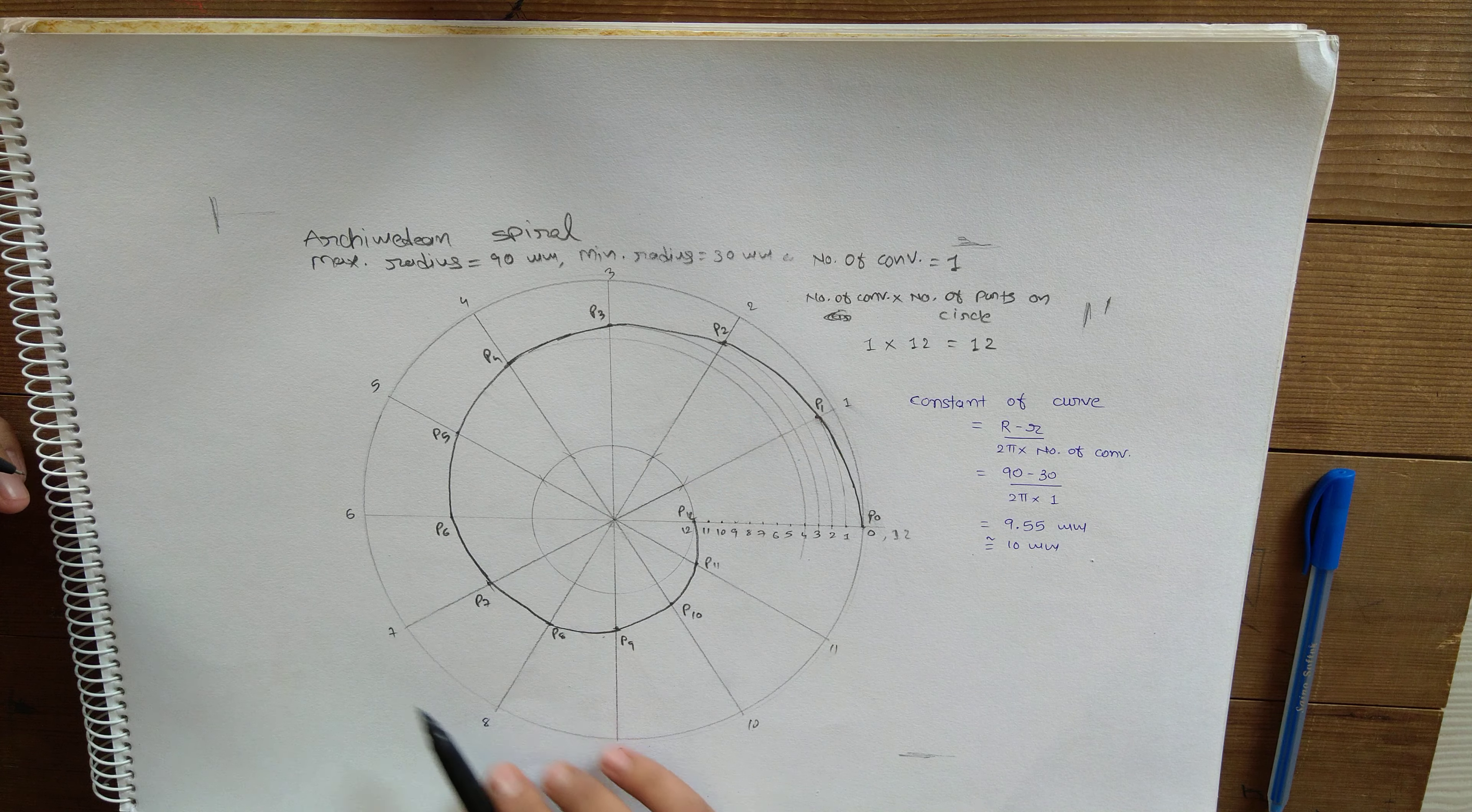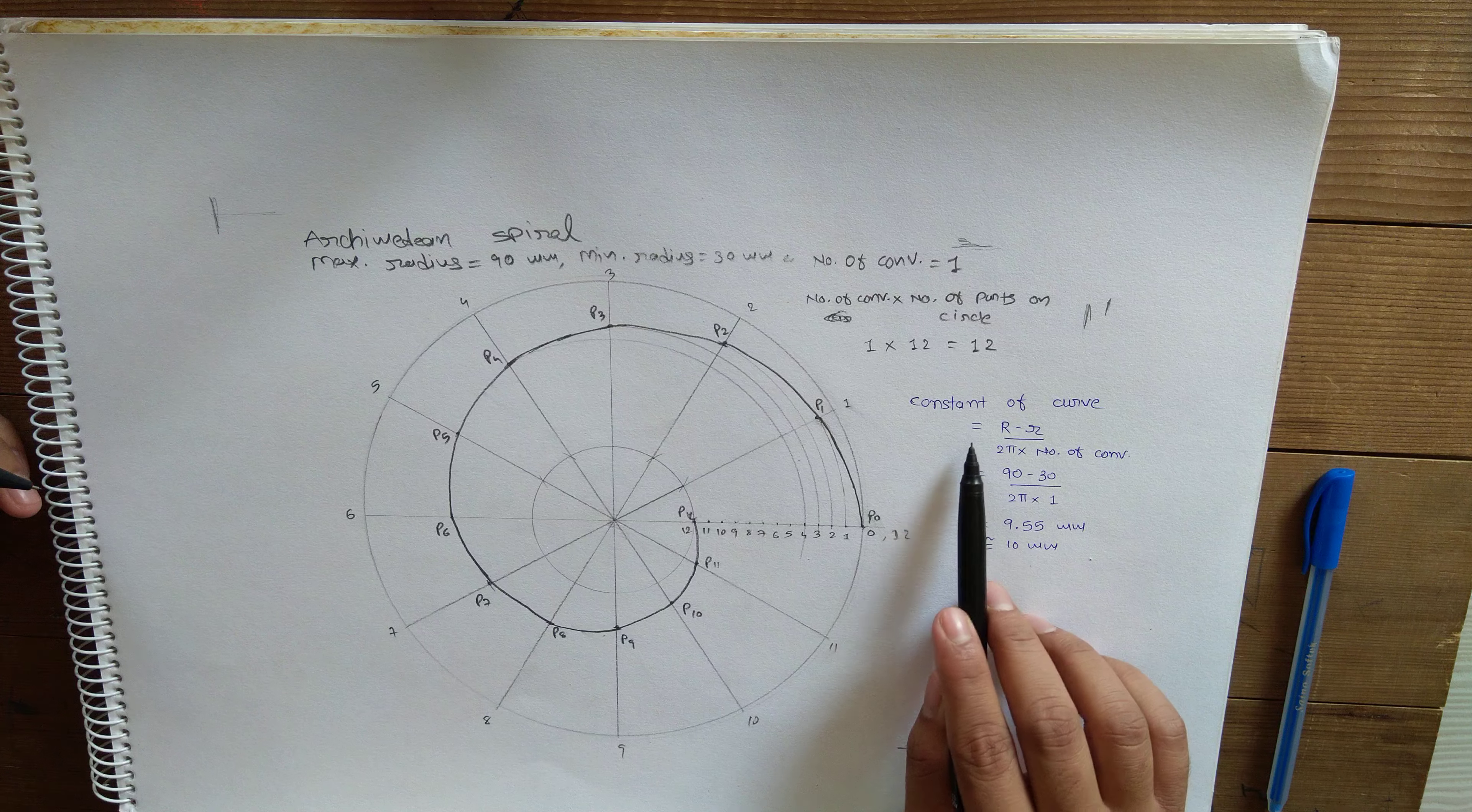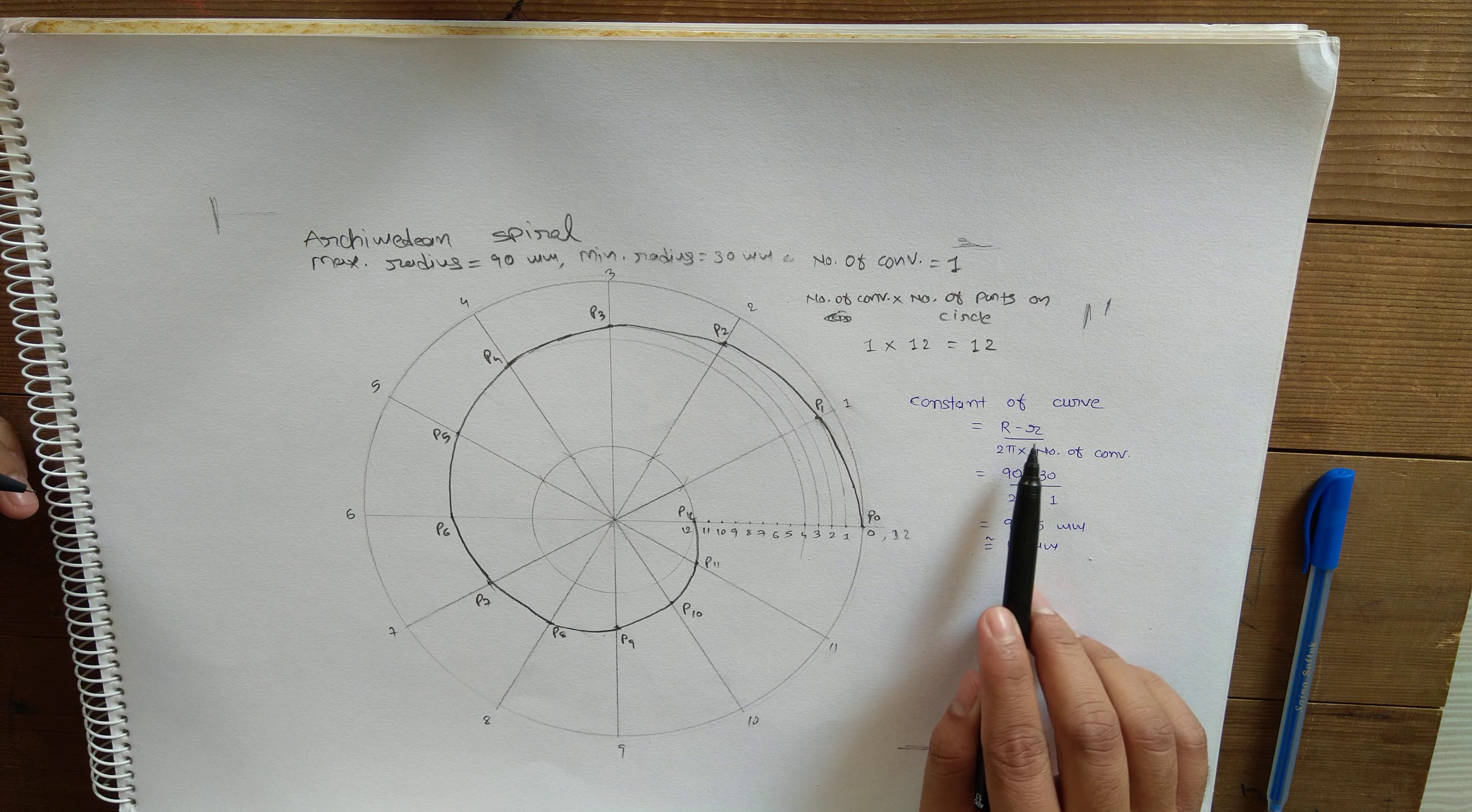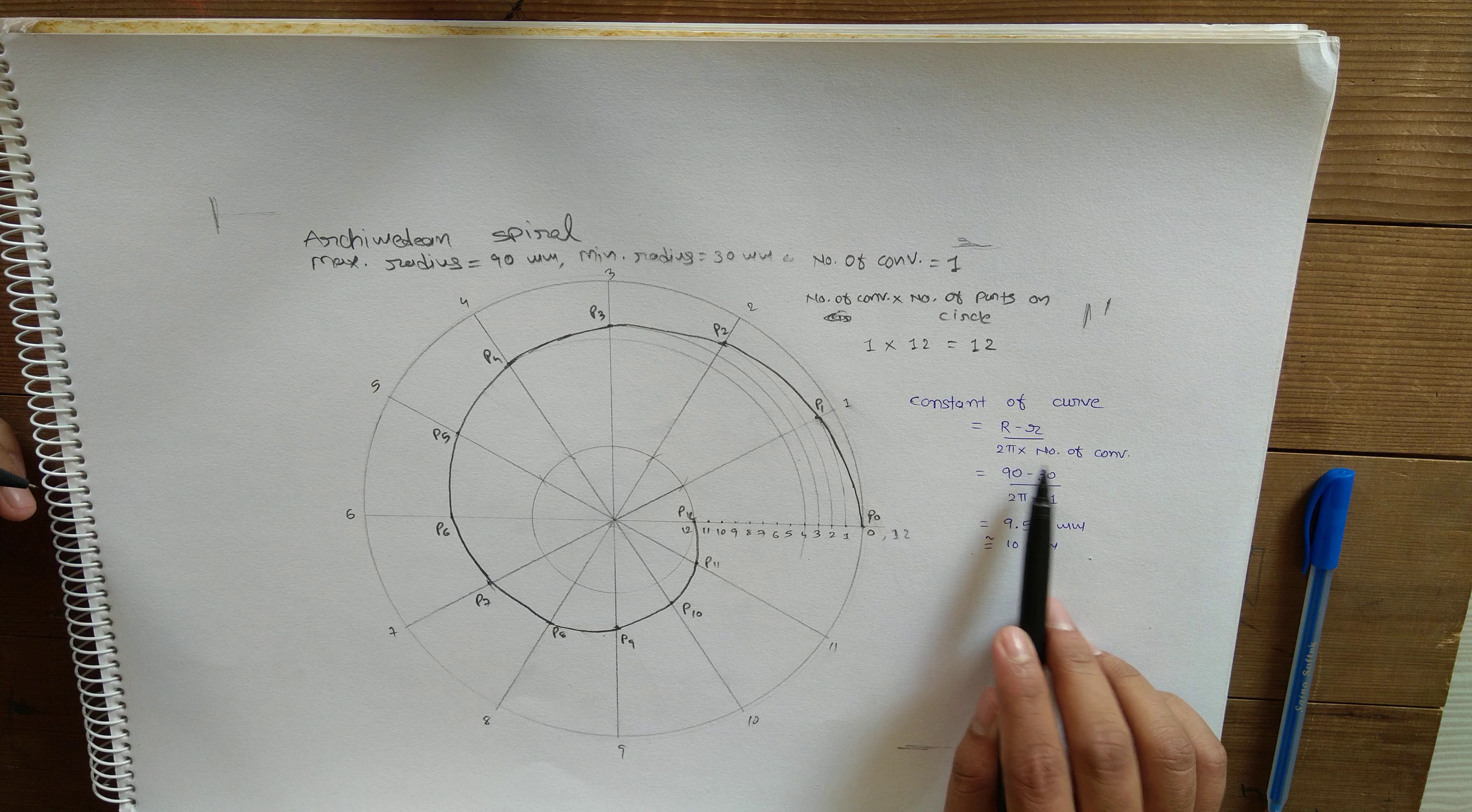To draw tangent and normal to the Archimedean spiral, you need to remember this equation. The constant of curve equals capital R minus small r (maximum radius minus minimum radius) divided by 2π multiplied with